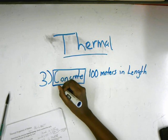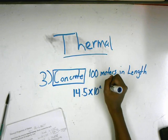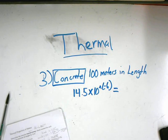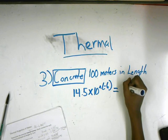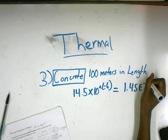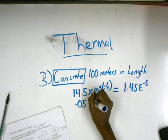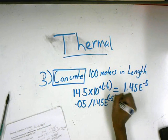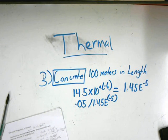Which equals 1.45 e to the negative 5. Hang on, 0.05 divided by your 1.45 e to the negative 5, which would equal 3,448.27. You take that.